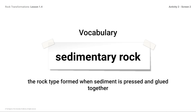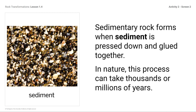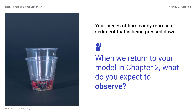Vocabulary — Sedimentary rock: the rock type formed when sediment is pressed and glued together. Sedimentary rock forms when sediment is pressed down and glued together. In nature, this process can take thousands or millions of years. Your pieces of hard candy represent sediment that is being pressed down. When we return to your model in Chapter 2, what do you expect to observe? You might respond: the pieces will be stuck together, representing sedimentary rock.